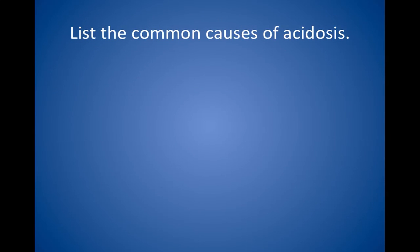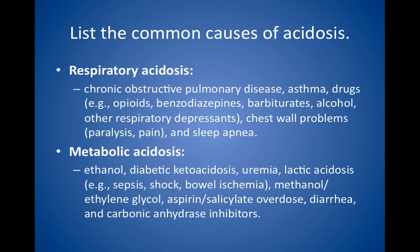List the common causes of acidosis. Respiratory acidosis can result from chronic obstructive pulmonary disease, asthma, drugs, chest wall problems such as paralysis and pain, or sleep apnea. The drugs that can lead to respiratory acidosis include opioids, benzodiazepines, barbiturates, alcohol, and other respiratory depressants.